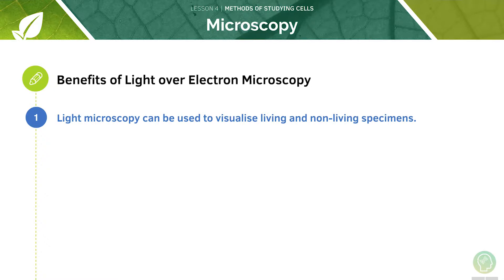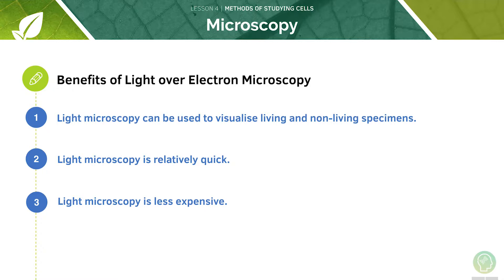Overall, electron microscopy is a very useful tool in biology compared to optical microscopy, but there are some benefits of light over electron microscopy. Light microscopy can be used to visualise living and non-living specimens, it's relatively quick, and it's also less expensive. A decent electron microscope can cost upwards of a million pounds, whereas an average light microscope is a few hundred pounds. The reagents needed to prepare specimens for electron microscopy are also much more expensive.